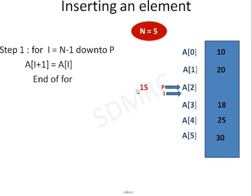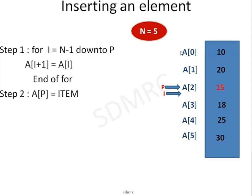Now I can shift the value of item onto this location. That is a[2] gets a value of 15, or a[p] gets a value of item. So step number 2: a[p] = item. Now as you can see, there are 6 elements. Previously I had 5 elements, now there are 6 because of this insertion. So n should get the value 6. Step number 3: n = n + 1.